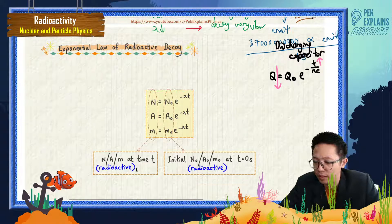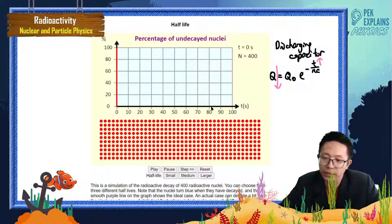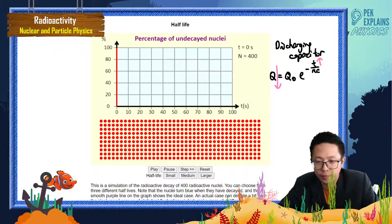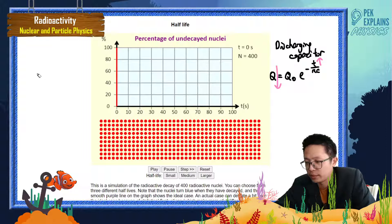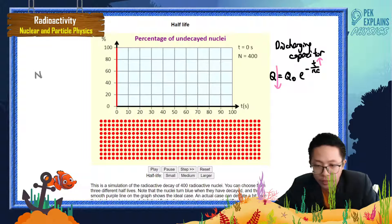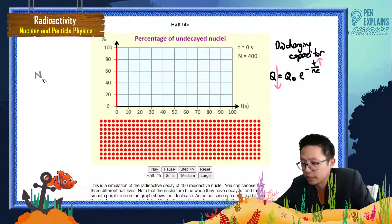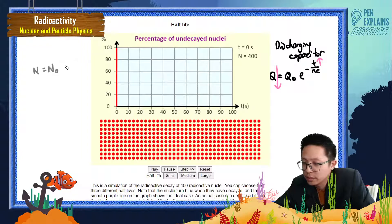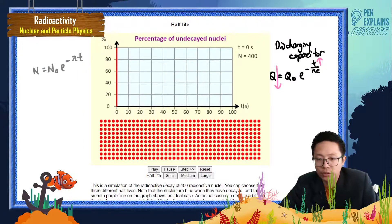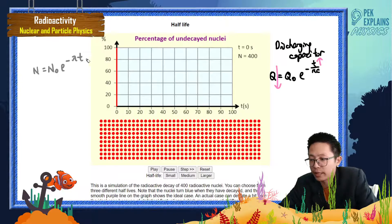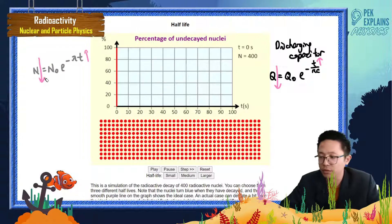So let us look at the figure here. For radioactive decay, we have this formula. N equals N₀ times e to the negative lambda t. As time goes by, the unstable nucleus also decreases over time.